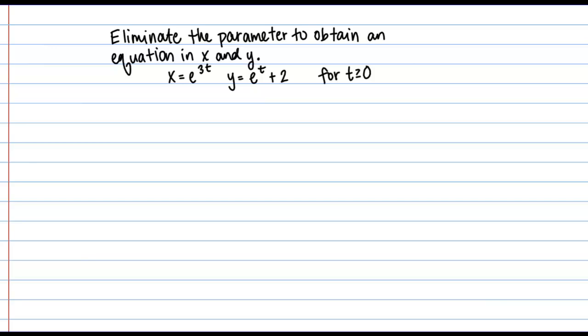So the directions here are to eliminate the parameter to obtain an equation in x and y. And my parametric equations are defined here. I have x equals e to the 3t and y equals e to the t plus 2. And we're considering t is greater than or equal to 0.